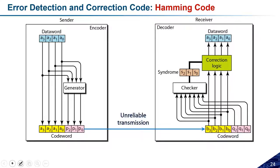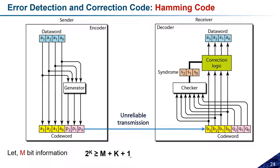Suppose I have m-bit information. To calculate how many parity bits are needed, this formula must be followed: 2^k ≥ m + k + 1, where m is the number of bits in the information (the message we want to transmit) and k is the number of parity bits required. The minimum value of k at which this condition is satisfied is the number of parity bits required to generate the Hamming code for that message.